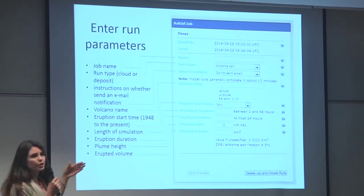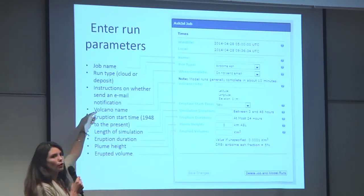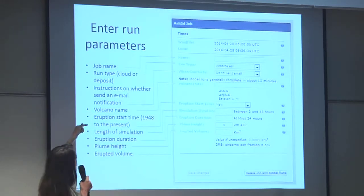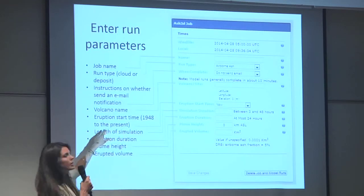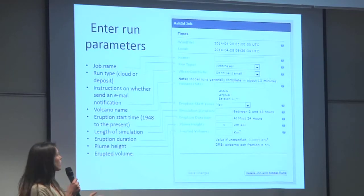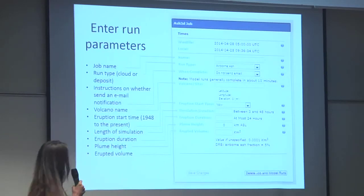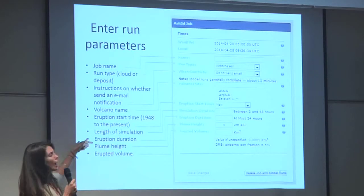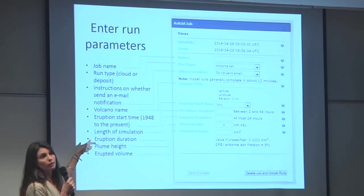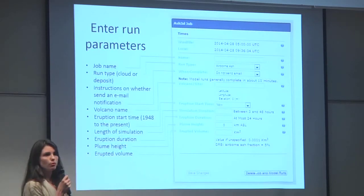You enter your information for what you want to call the run. The key things are which volcano you're talking about, the start time. The reason there's a limited time period for back-forecasting is that 1948 is when wind fields were readily available. You put in how long you want to run your simulation, how long the eruption is going to last, the plume height, and the erupted volume as a dense rock equivalent — bubble-free.